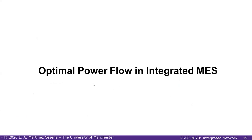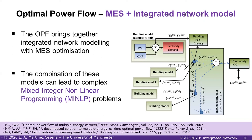Now that we've covered the basics of the power flow, let's move on to the optimal power flow. The OPF brings together the network model with the multi-energy system — the use of devices for providing services to customers. Each of these models is quite complex, so bringing them together significantly increases the complexity of the system. This type of problem is much more complicated to solve than just the networks themselves or just the multi-energy system. But it is quite valuable because it allows us to see flexibility that cannot be seen by either model alone.